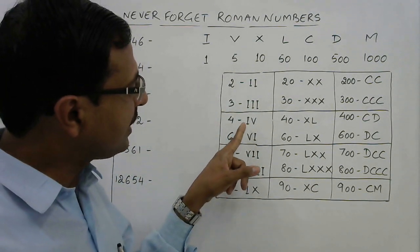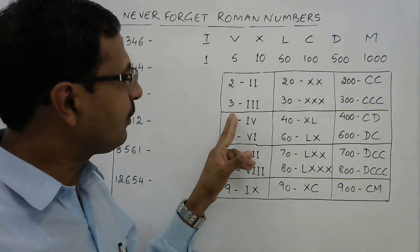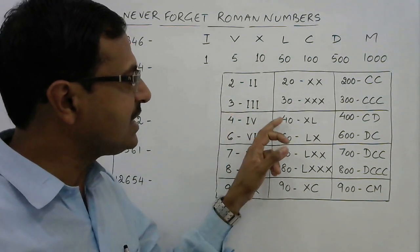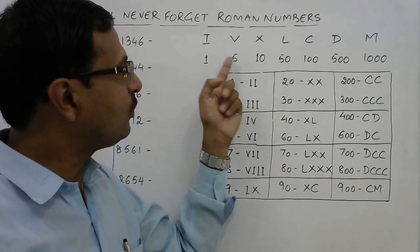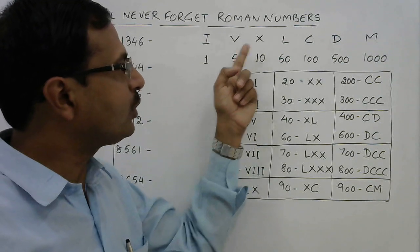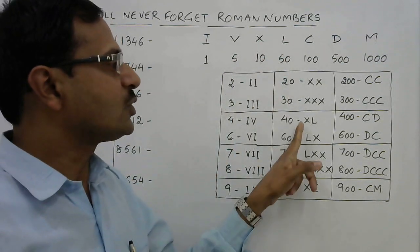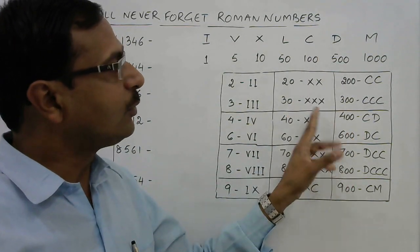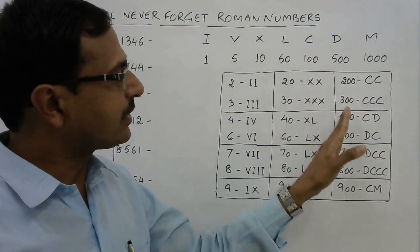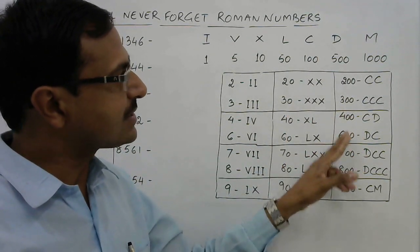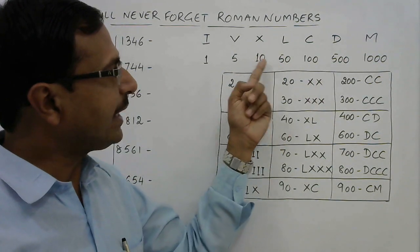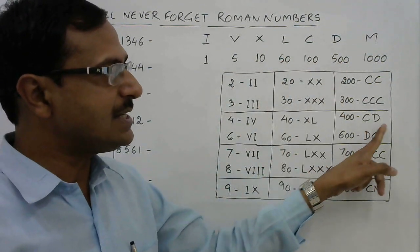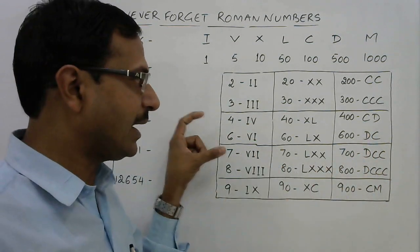Applying the same zero-scaling: for 40 and 60, we shift from I and V to X and L, giving XL for 40 and LX for 60. Moving one more zero to 400 and 600, we shift to CD and DC.